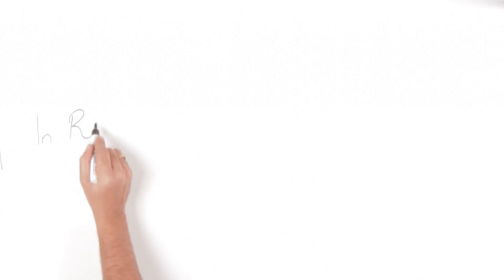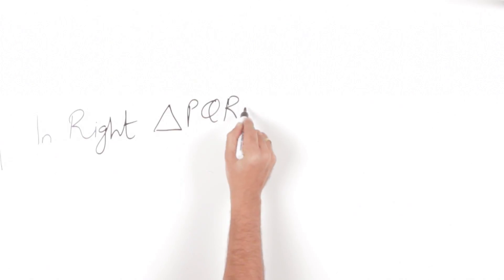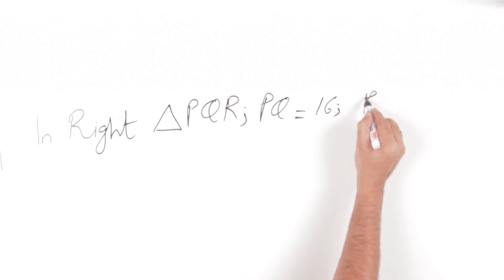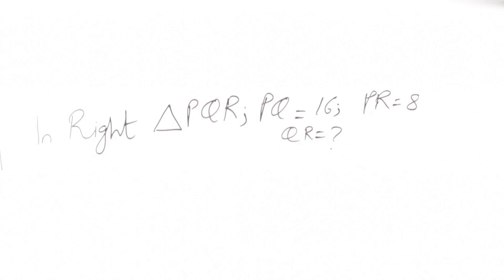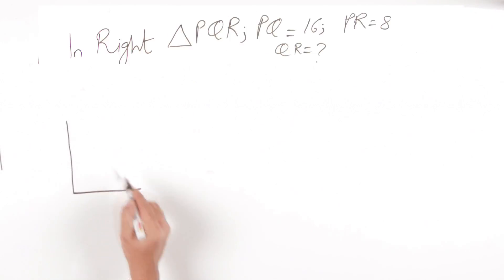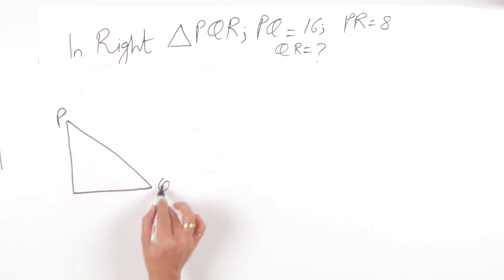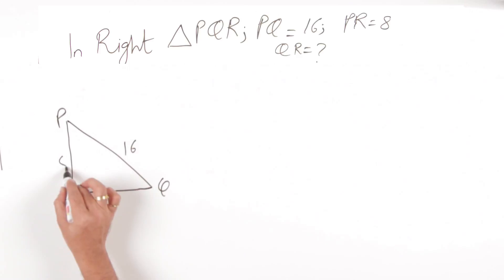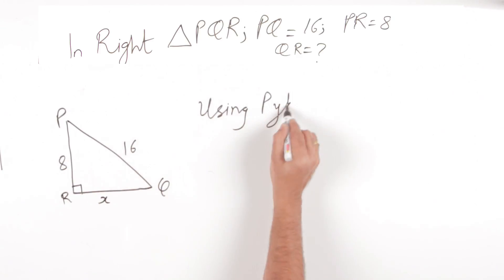In this problem we have a right angle triangle PQR with PQ equal to 16 and PR equal to 8. We need to find the length of QR. PQ will be the hypotenuse with length 16, PR is equal to 8, and let's say QR is X. We should use the theorem of Pythagoras.